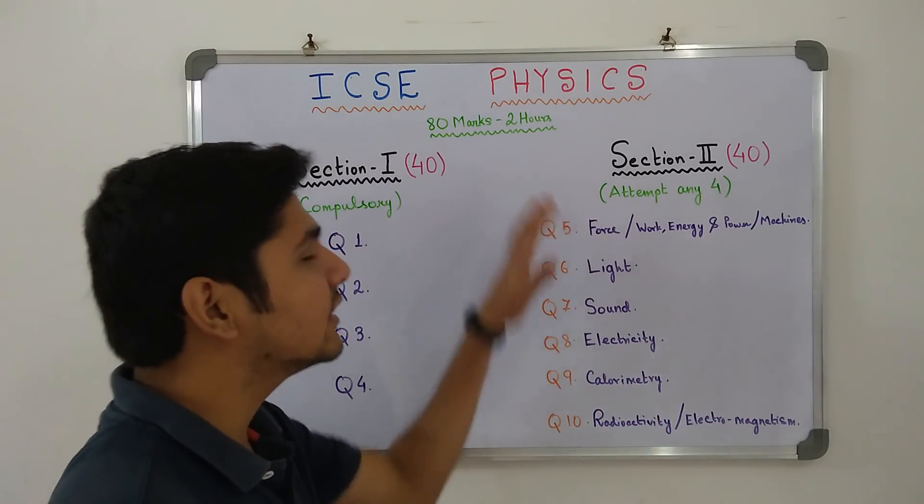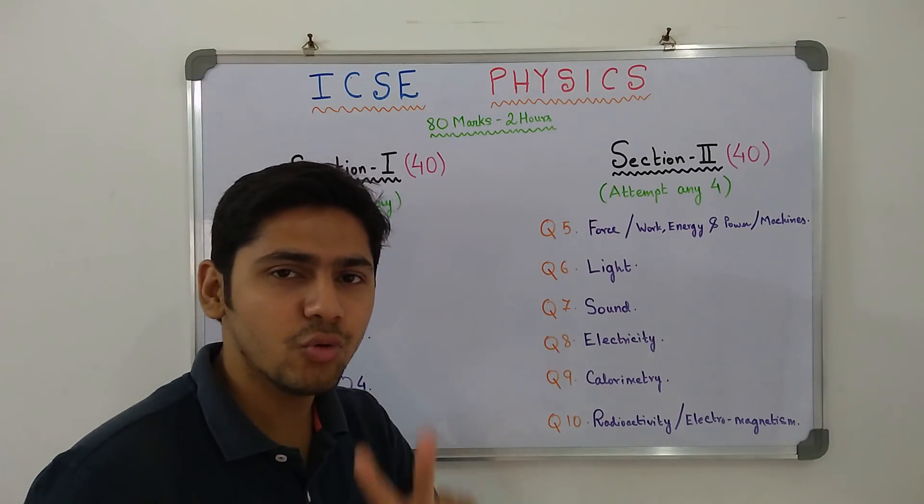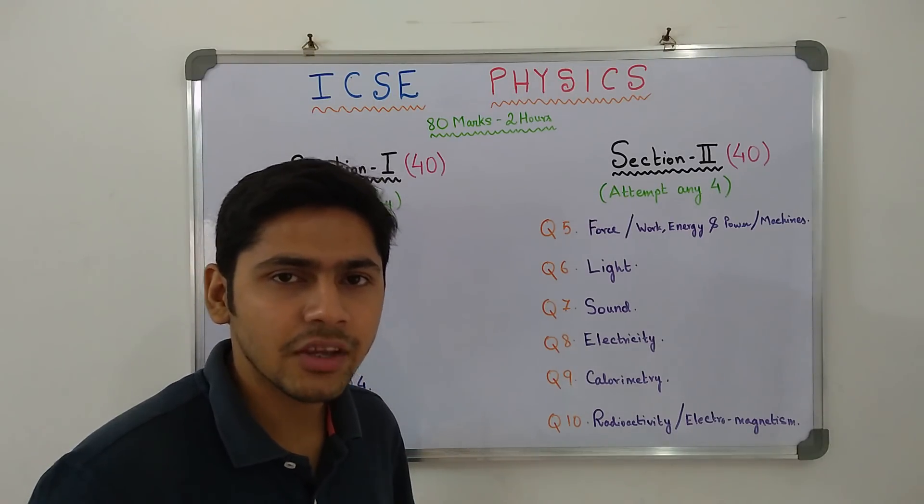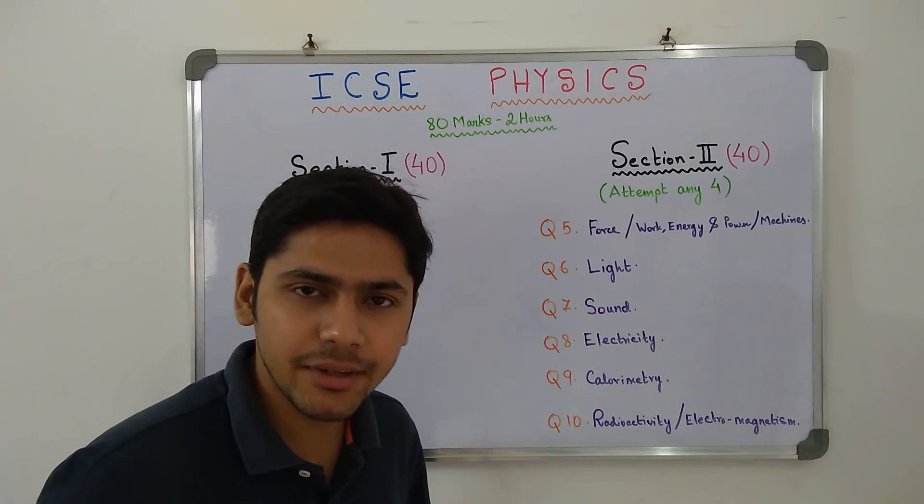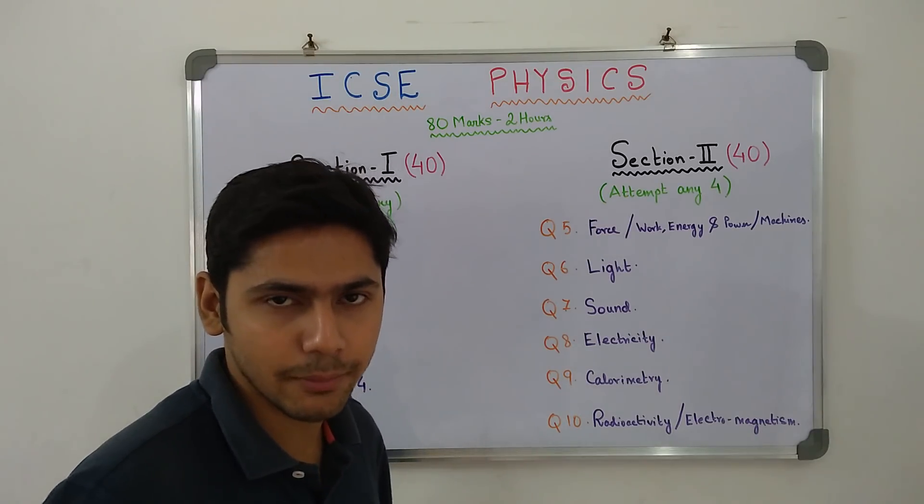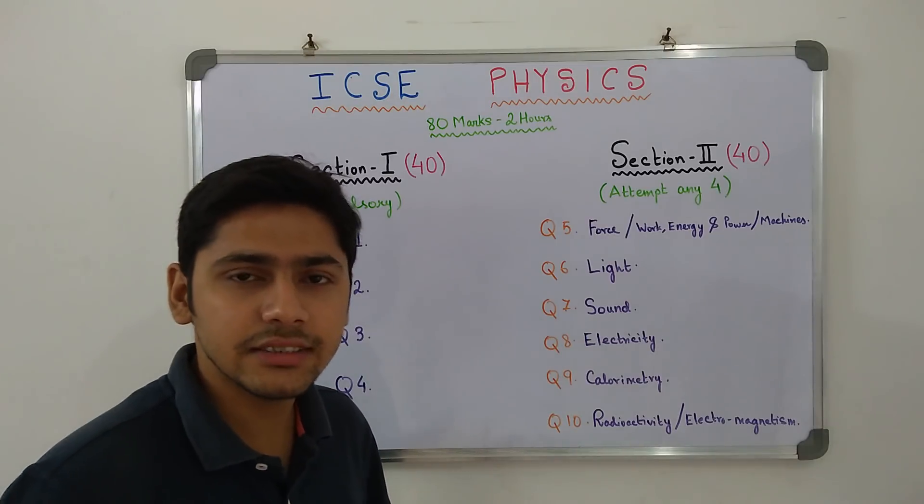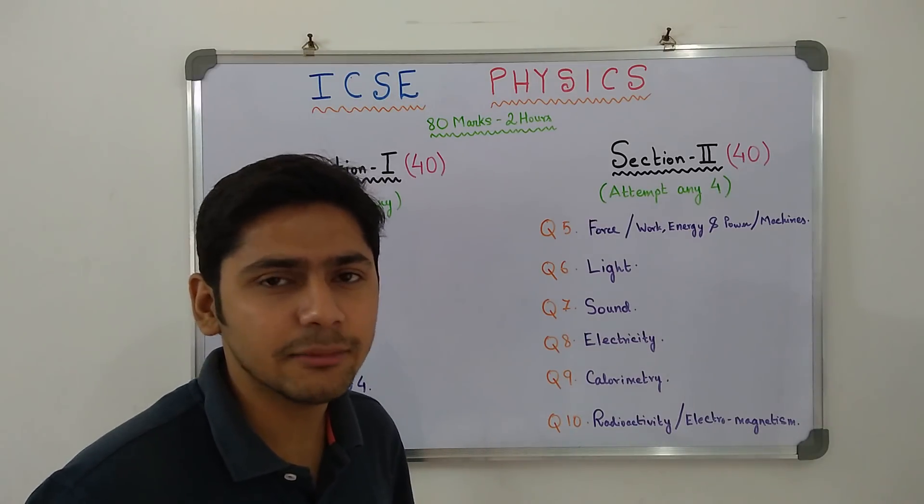ICSE Physics. This is an 80 marks question paper and you will have 2 hours to solve the whole thing. You will also get an additional 15 minutes to read out the whole question paper. The pattern of this particular question paper is very simple and you will easily get it.